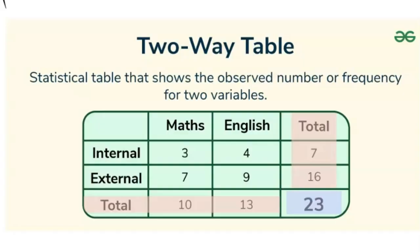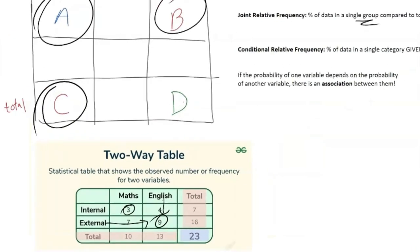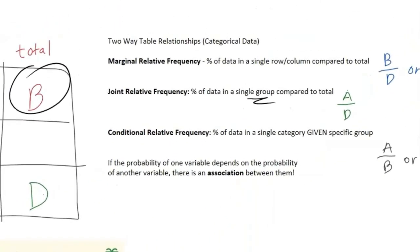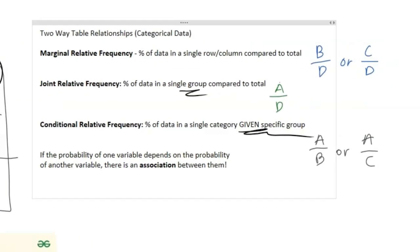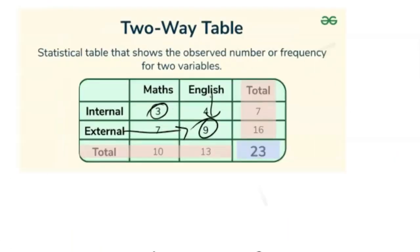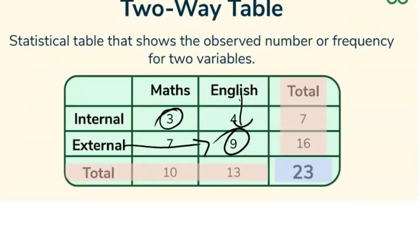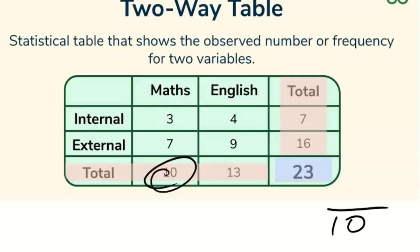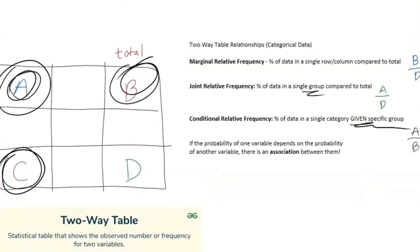If we look in our two-way table with actual variables, that's something like math internal, so that'd be 3 over 23. Or maybe we want to look at external English, so that's 9 over 23. Next we're going to talk about conditional relative frequencies - a percentage of data in a single category when you're given a specific group. Now we're looking at A over B or A over C. In our two-way table, let's say we're given that the student is in math, so that'd be 10. We want to know what percentage of that is internal - we have three, so that'd be 3 over 10 as an example.